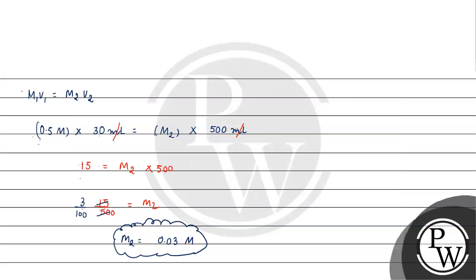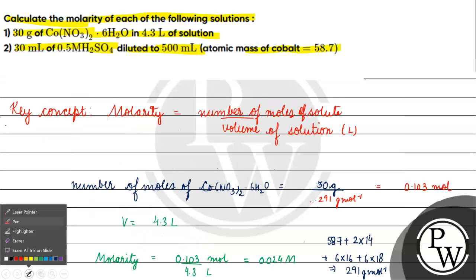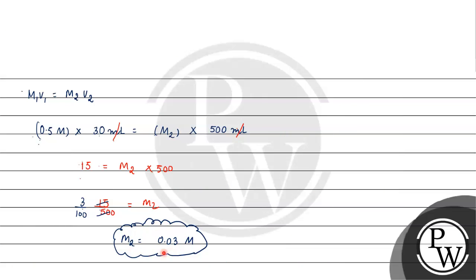I hope you have understood this. Molarity of cobalt nitrate is 0.024 molar, and molarity of H2SO4 is 0.03 molar. I hope you understood it well. Thank you and all the best.